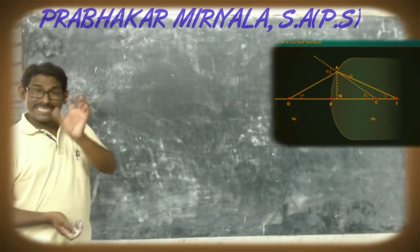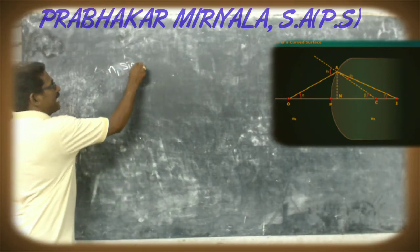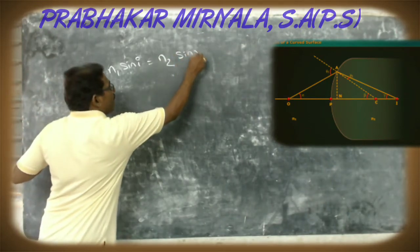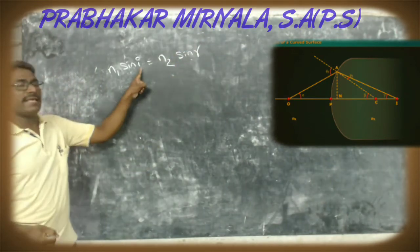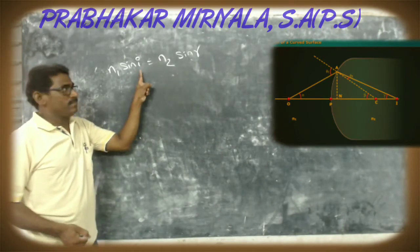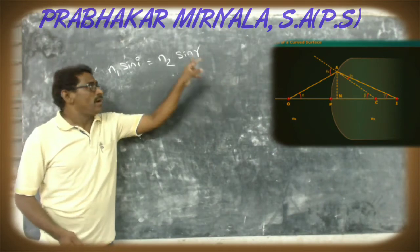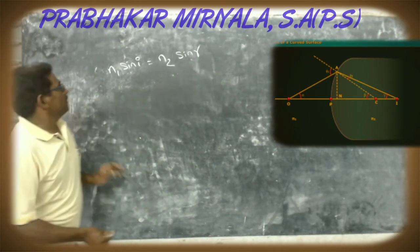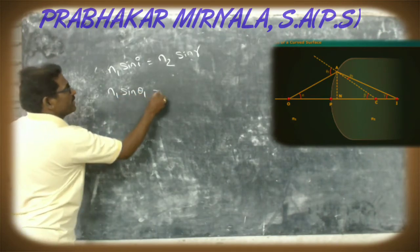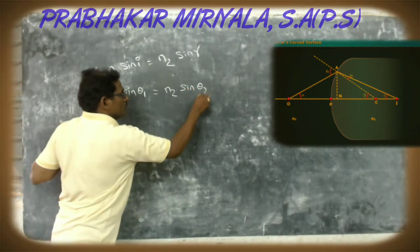We know from Snell's law that N1 sin I equals N2 sin R. Here I is the angle of incidence, which from the diagram is theta 1, and R is the angle of refraction, which is theta 2. Therefore, N1 sin theta 1 equals N2 sin theta 2.